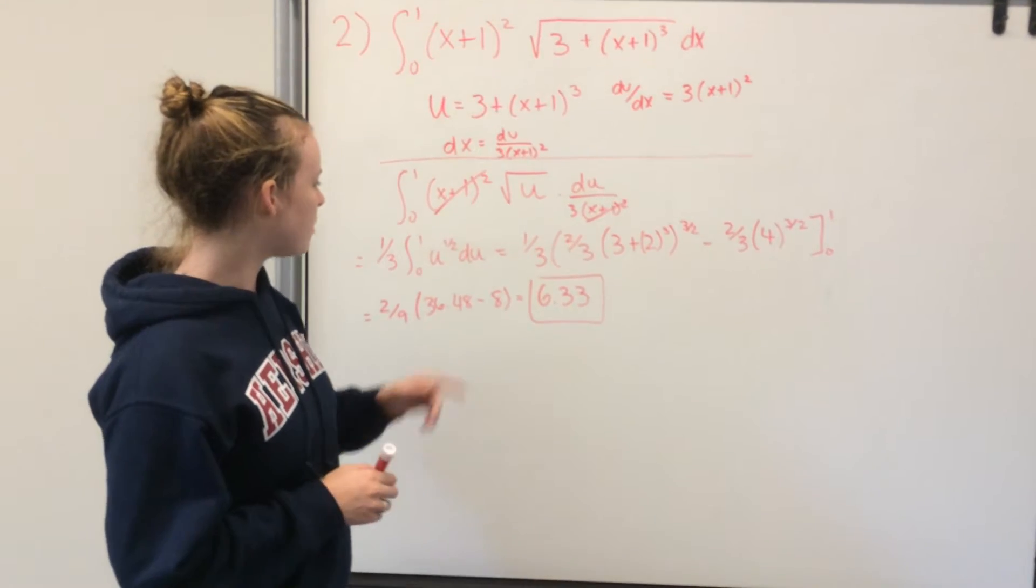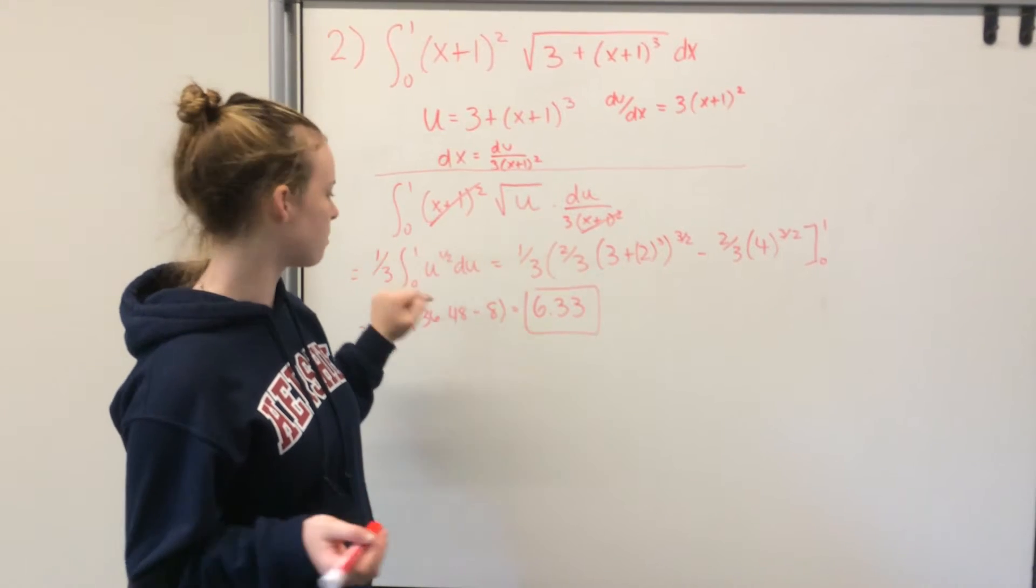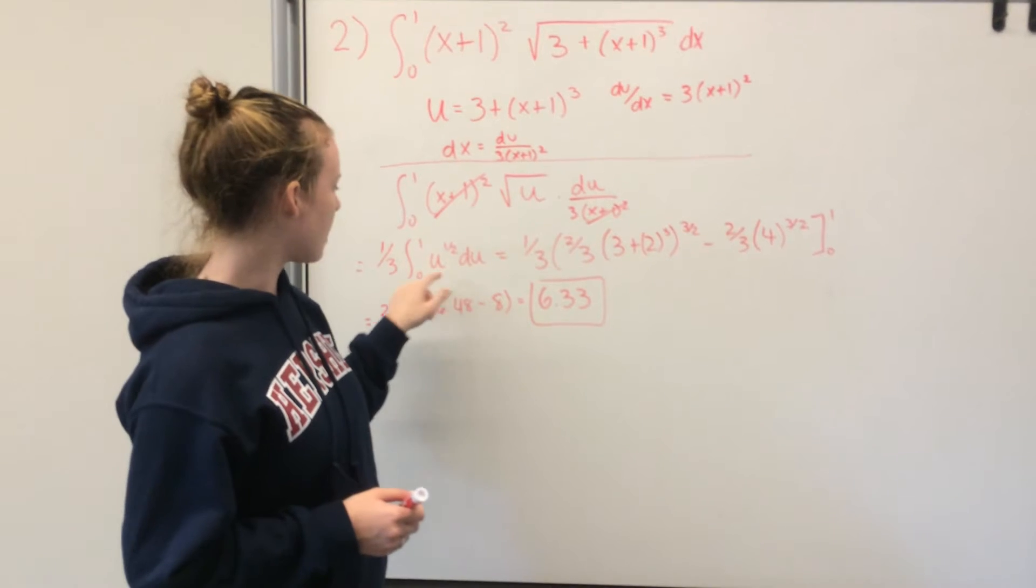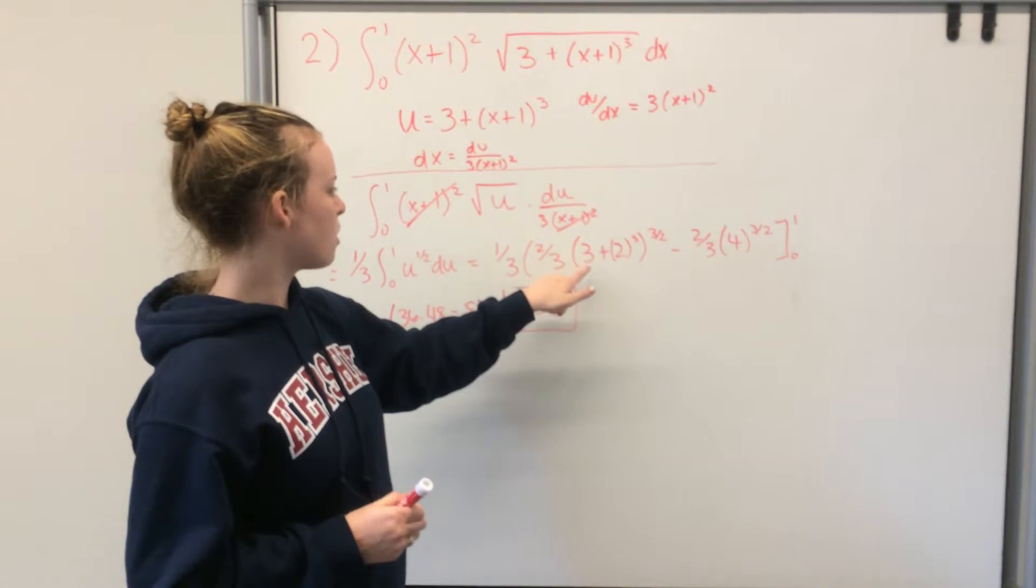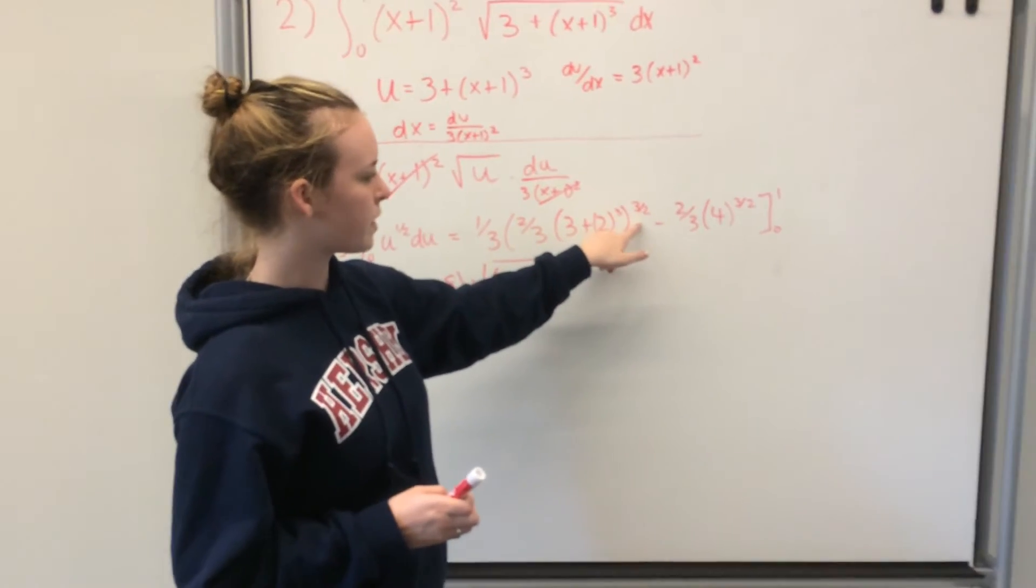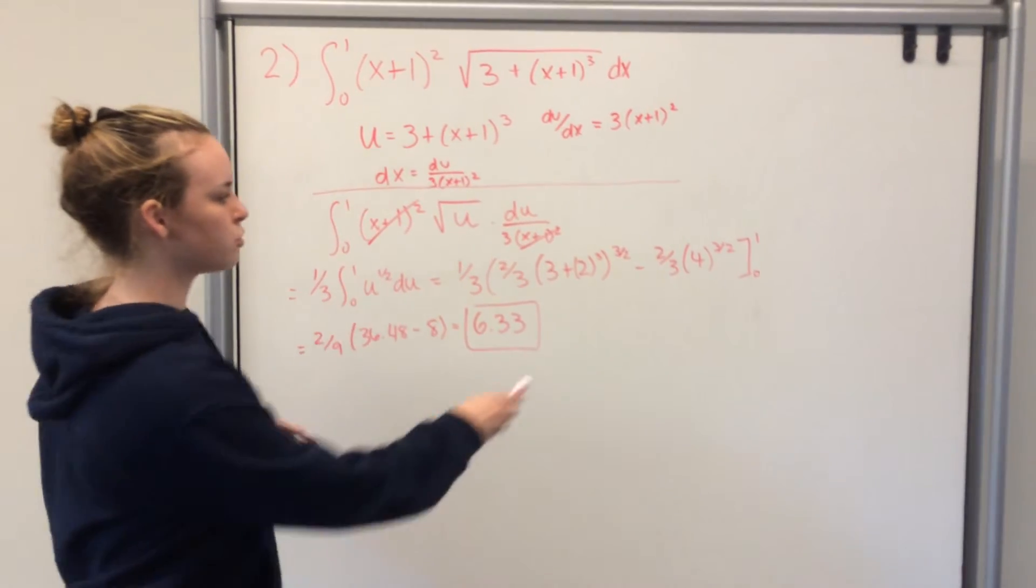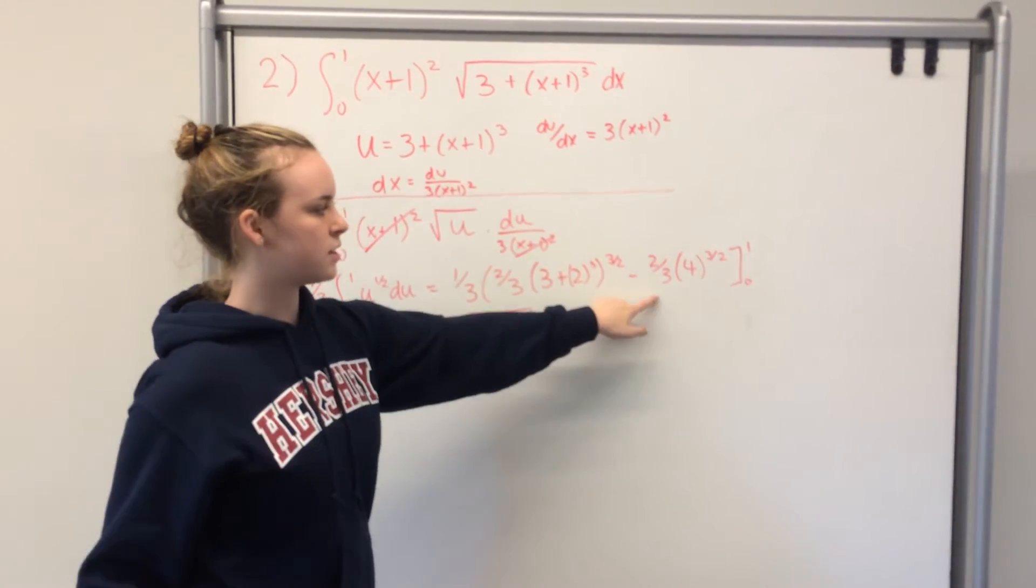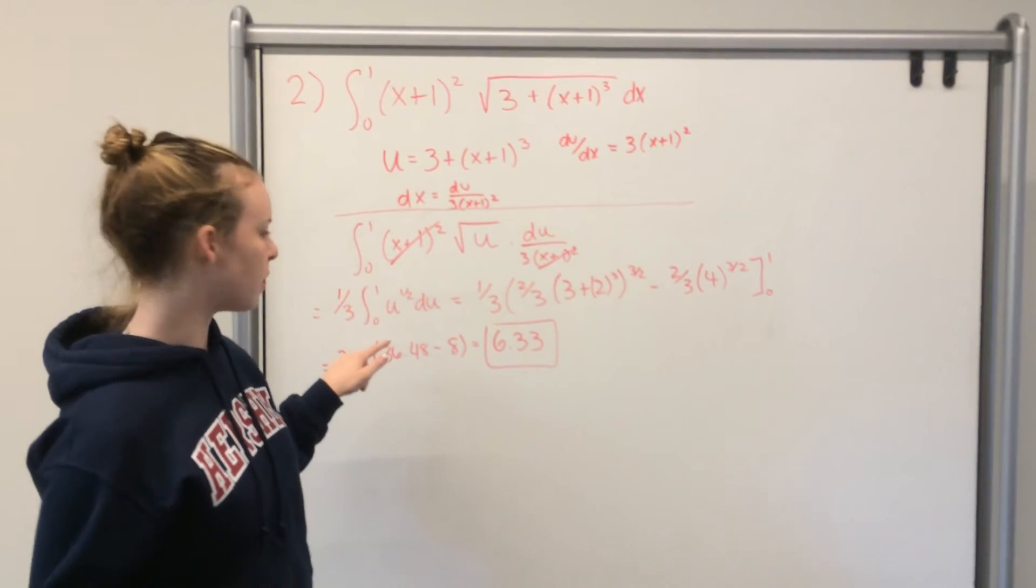Now you take the integral of u to the 1 half, and you do 1 third times 2 thirds times 3 plus 2 to the 3 half power, and that's when you plug in the 1, and then you subtract 2 thirds times 4 to the 3 half, which is the result when you plug in 0.